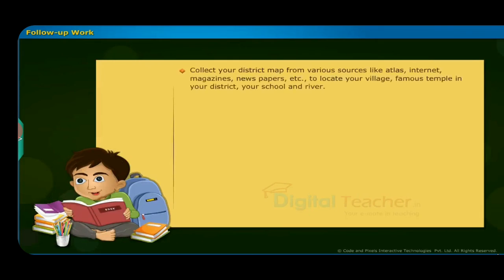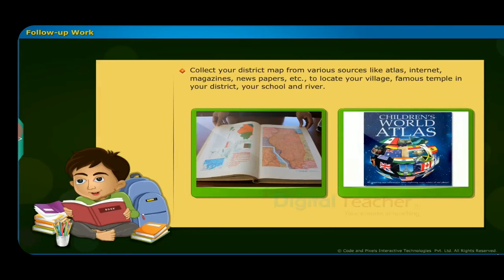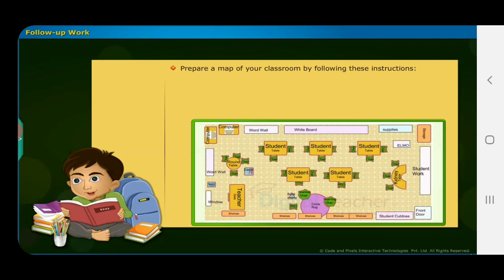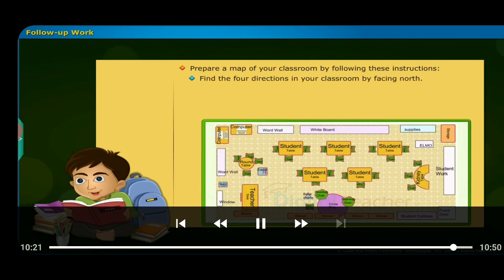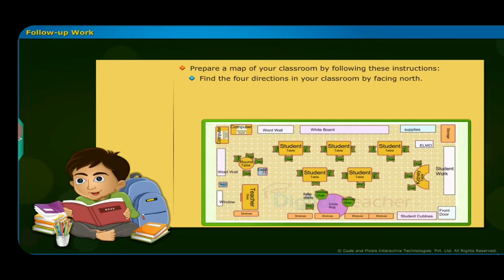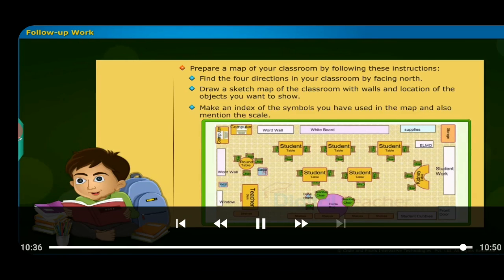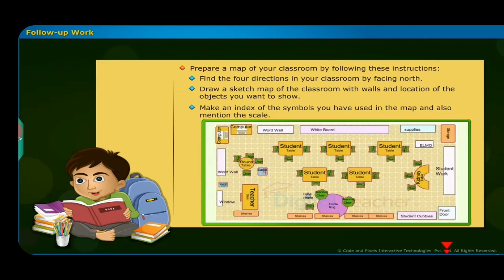Follow-up work: Collect your district map from various sources like Atlas, internet, magazines, newspapers, etc., to locate your village, a famous temple in your district, your school, and a river. Also, prepare a map of your classroom by following these instructions: find the four directions in your classroom by facing north; draw a sketch map of the classroom with walls and location of the objects you want to show; make an index of the symbols you have used in the map and also mention the scale. You have successfully completed the chapter.